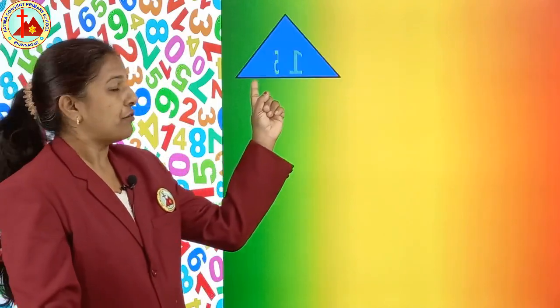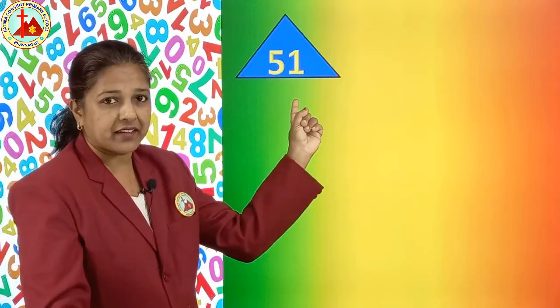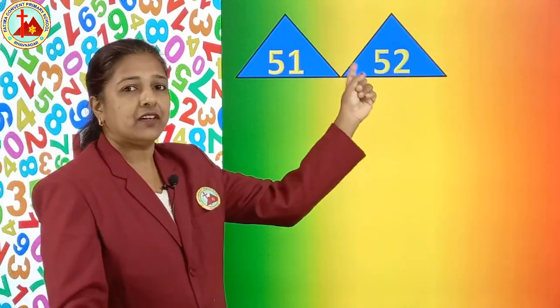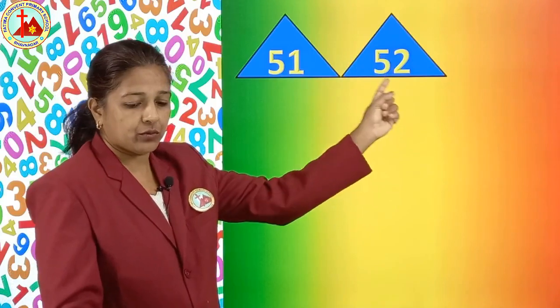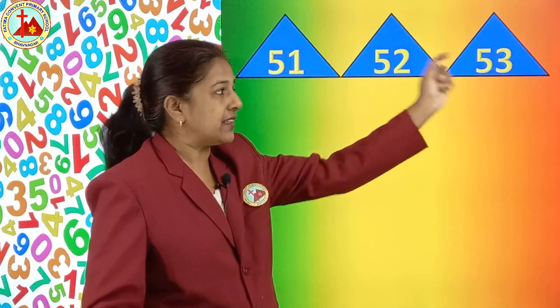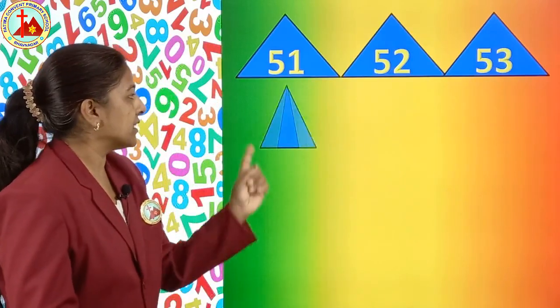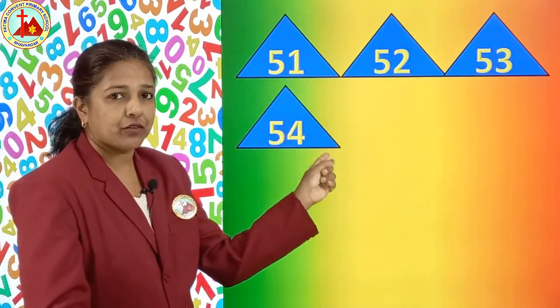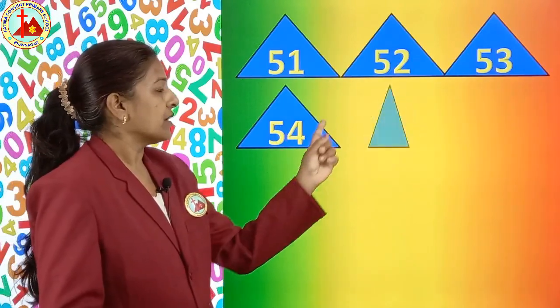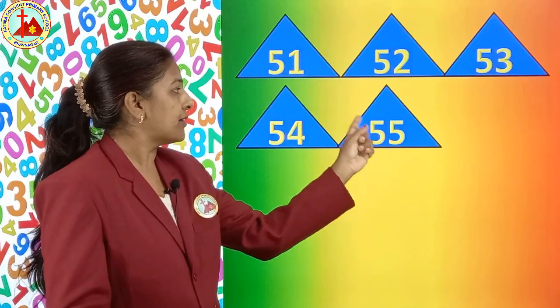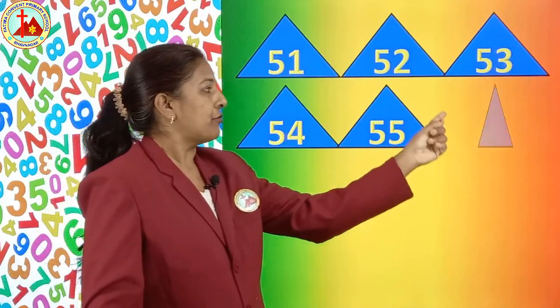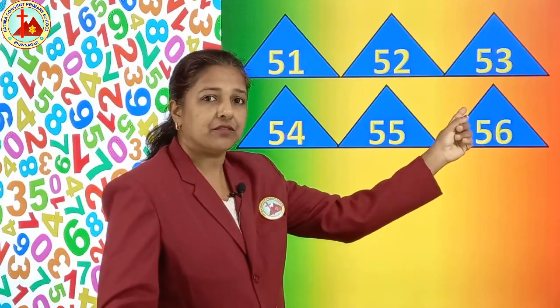First 5, 1, 51 then 5, 2, 52. Next 5, 3, 53. After 53, 5, 4, 54. After 54, 5, 5, 55. After 55, 5, 6, 56.